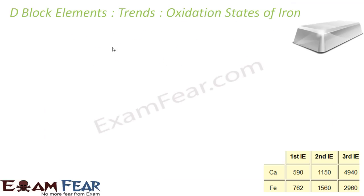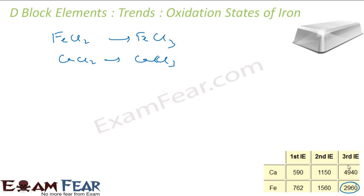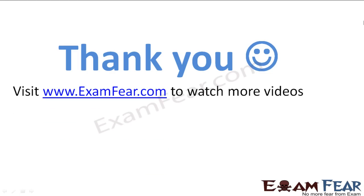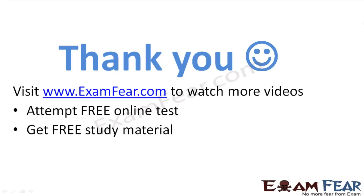Now we will talk about the oxidation states of iron. It is easy to convert from FeCl2 to FeCl3 because the third ionization energy of iron is only 2960 kJ/mol. For CaCl2 to CaCl3 it is difficult because the third ionization energy of calcium is 4940 kJ/mol. Visit examfier.com to watch more videos, attempt free online tests, get pre-study materials, find tutors and mentors, and much more. Thanks once again.